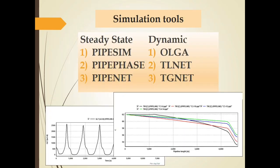Flow Assurance Study perlu menggunakan software-software simulasi. Untuk Flow Assurance Steady-State bisa menggunakan PIPESIM, PIPSIM, maupun PIPENET. Sedangkan OLGA, CLNET, maupun TGNET bisa digunakan untuk simulasi transient. Flow Assurance Study will require simulation software. For steady state, PIPESIM, PIPSIM, and PIPENET can be used. Meanwhile, OLGA, TLNET, or TGNET can be used for transient analysis.